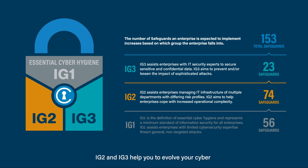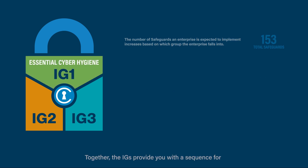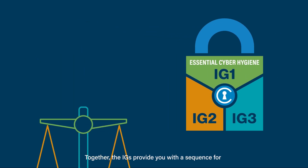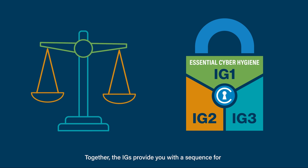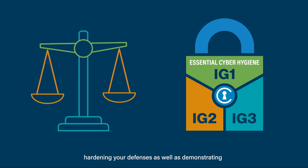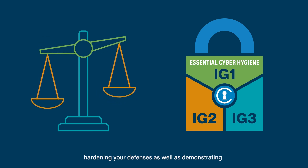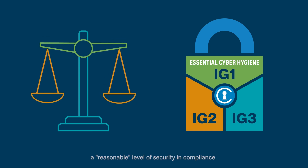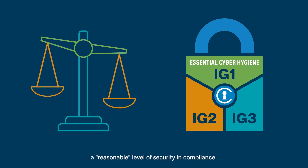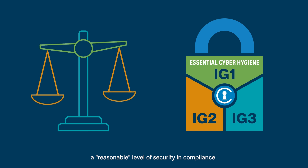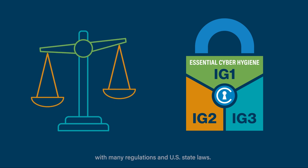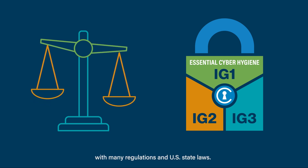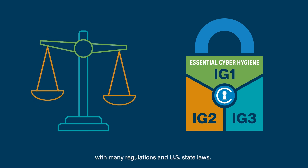IG2 and IG3 help you evolve your cyber maturity even further. Together, the IGs provide you with a sequence for hardening your defenses, as well as demonstrating a reasonable level of security in compliance with many regulations and U.S. state laws.